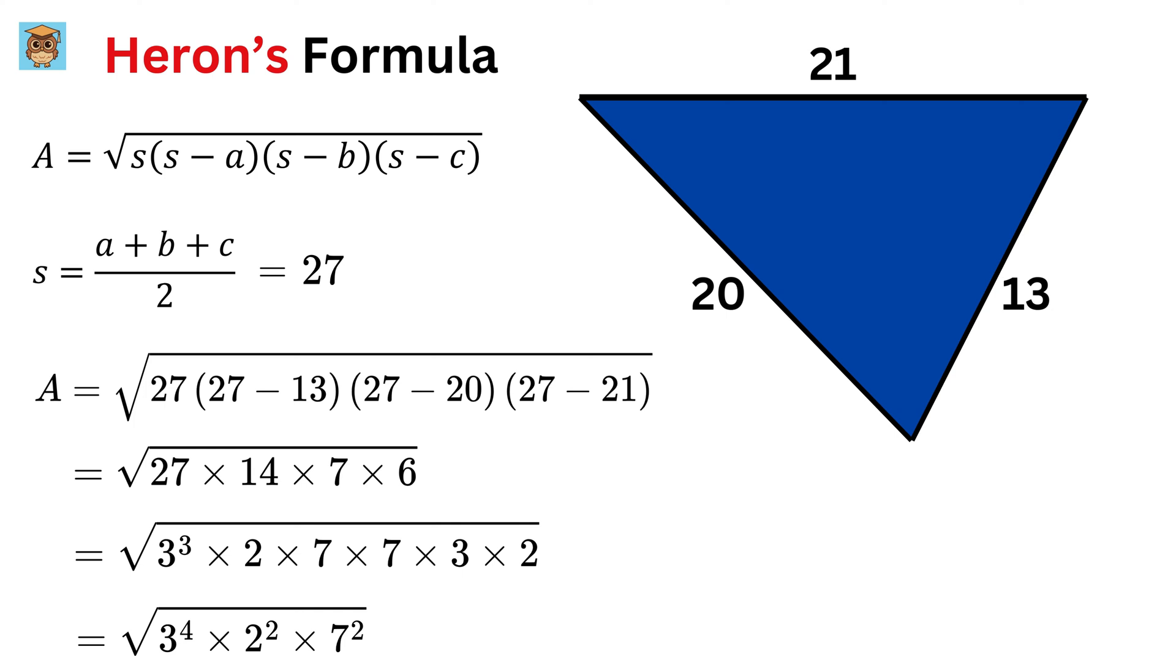So, after removing this square root, we are left with 3 square times 2 times 7, or 126 square units.